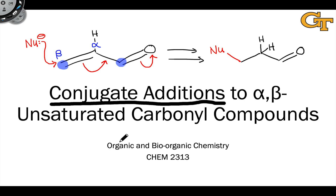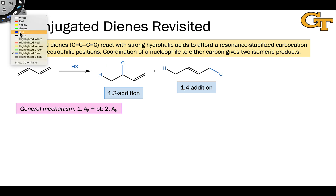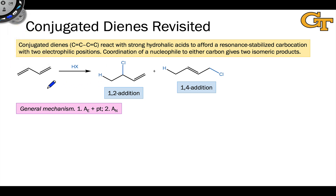However, certain types of nucleophiles in the presence of these compounds engage in conjugate addition selectively. Before we dive into all that, I want to use an analogy to something you may have seen before: the hydrohalogenation of conjugated dienes.